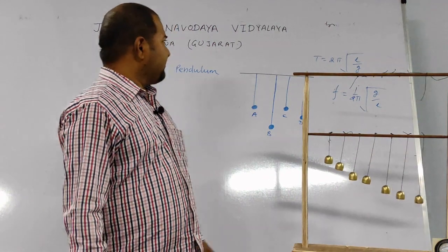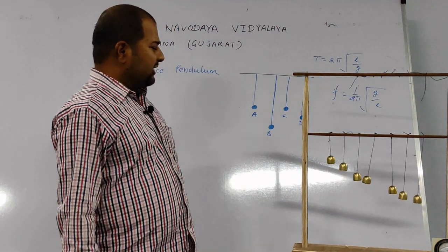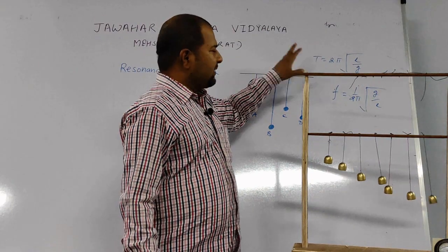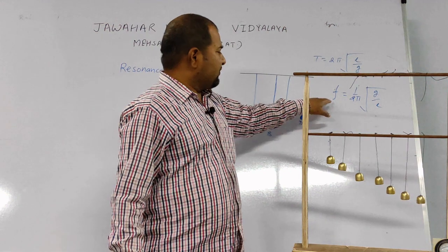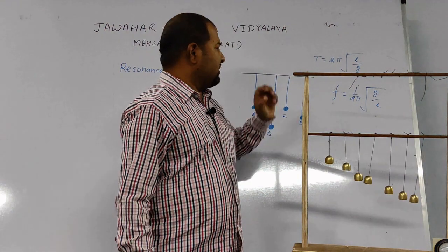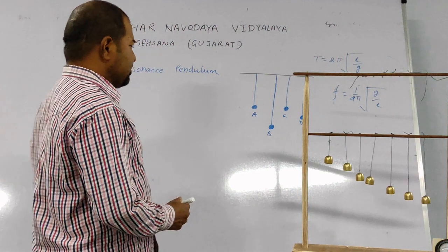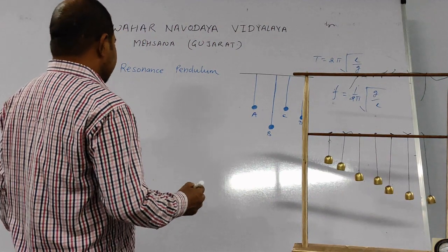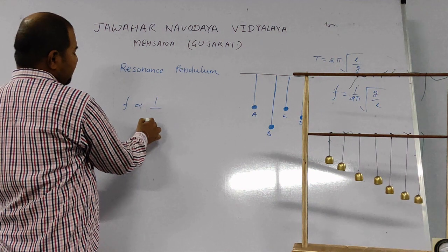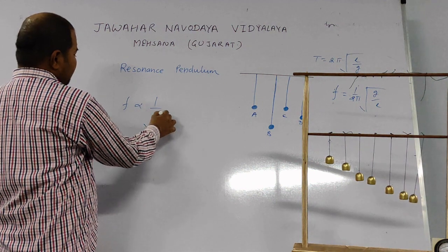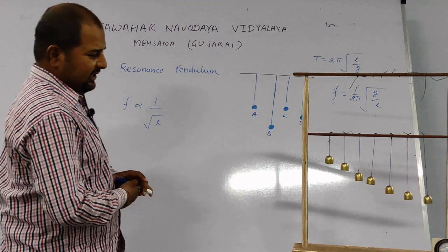First, we are all familiar with the simple pendulum. We know that the time period of a simple pendulum is 2π√(L/G). So its frequency is given by f = 1/(2π) × √(G/L). Here, frequency is inversely proportional to the square root of length, which means frequency depends on the length.